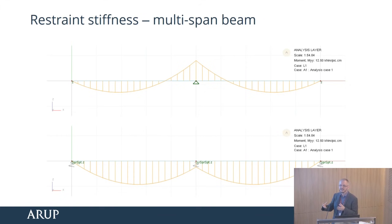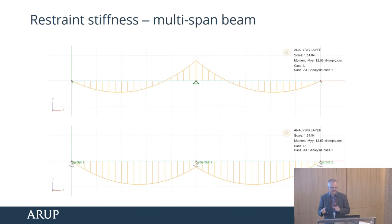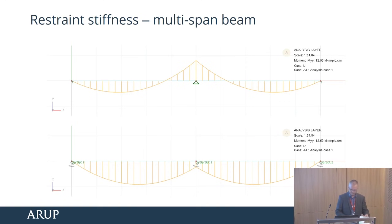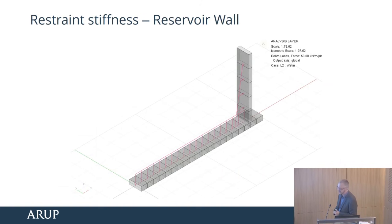If the springs — the ground — is soft enough, you'll probably get behaviour closer to two semi-supported beams. So accuracy in the support stiffnesses can make a big difference to your design moments.